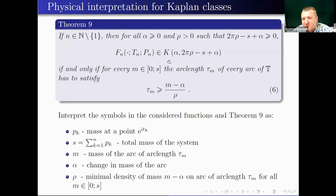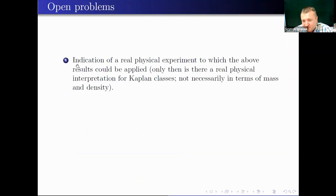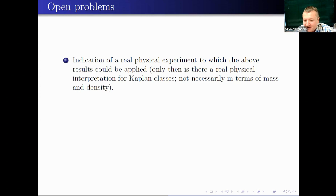Since we are not physicists, we do not have enough knowledge in physics to go deeper, but we gave this simple — or basic — physical interpretation of Kaplan classes. What remains as an open problem is finding a concrete physical experiment to which the above results could be applied. That would make the interpretation non-artificial, a real physical experiment where our mathematical results explain the physics. Also open is finding a physical interpretation of Kaplan classes not necessarily in terms of mass and density.